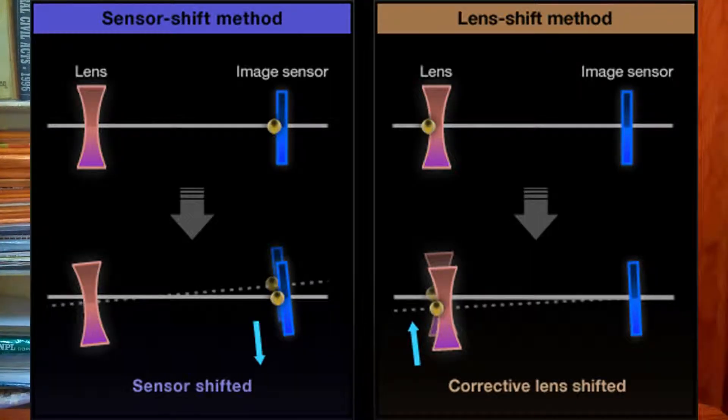To overcome this problem, optical image stabilization has been implemented. For example, when you are taking a video and move the phone to one side, the OIS sensor reacts in the opposite direction — the sensor moves the other way so the image is stabilized. If you move upside, the sensor moves downside; if you move downside, the sensor moves upside; if you move right, the sensor moves left. With this, the image will not be shaken and will come out very well. You can see OIS in high-end mobiles like iPhone, Samsung, OnePlus, and Huawei.